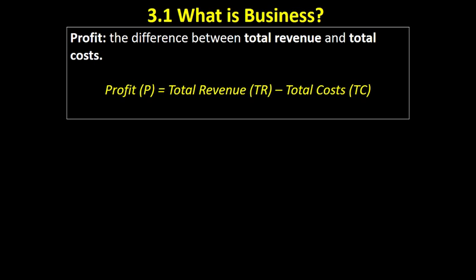Here is the formula for profit. Profit is the difference between total revenue — in other words the money that is coming into a business — and total costs, the money that goes out of the business in order to generate those revenues.